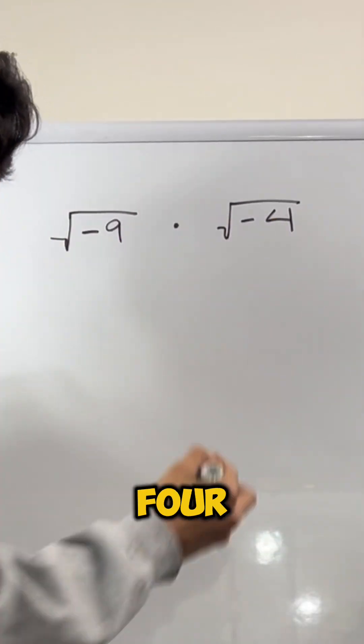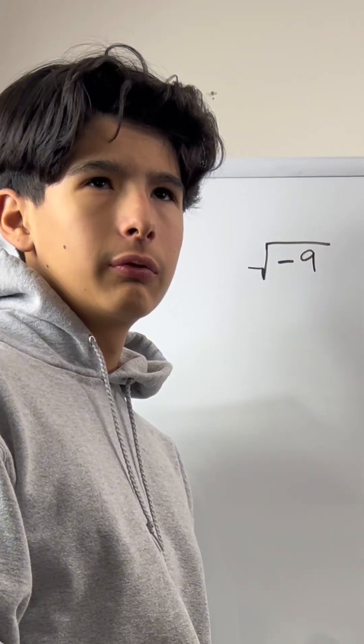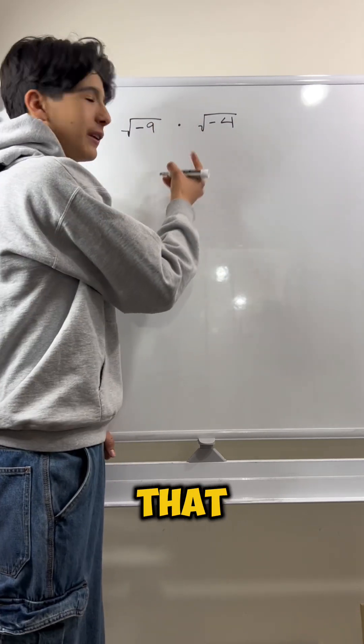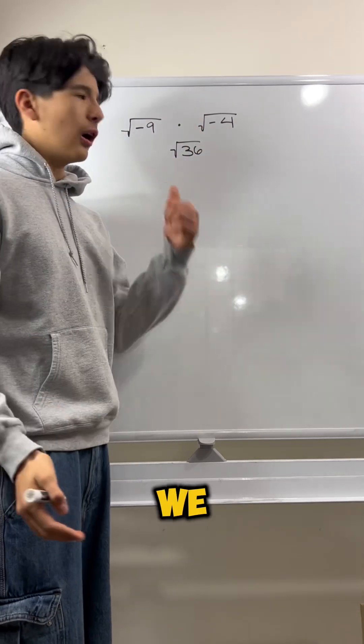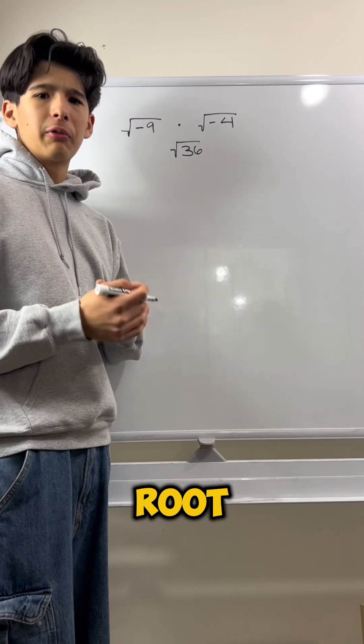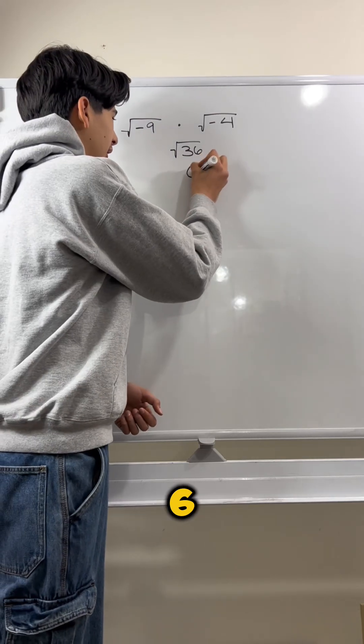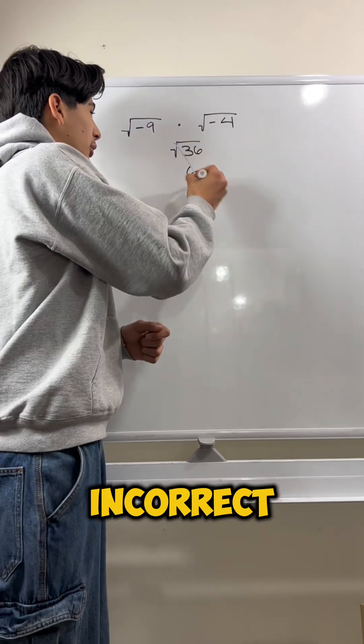Negative 9 times negative 4 is... positive 36. So, let's write that down. Then, we all know what the positive square root of 36 is. It is just 6, right? And that's what a lot of you said, but this is incorrect.